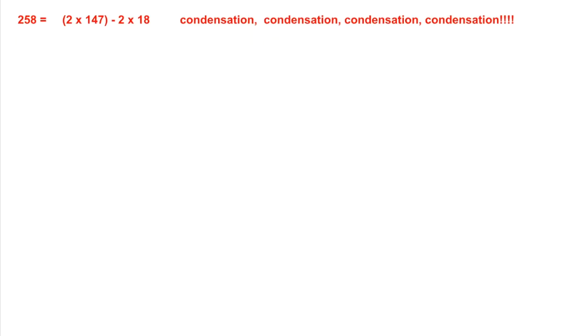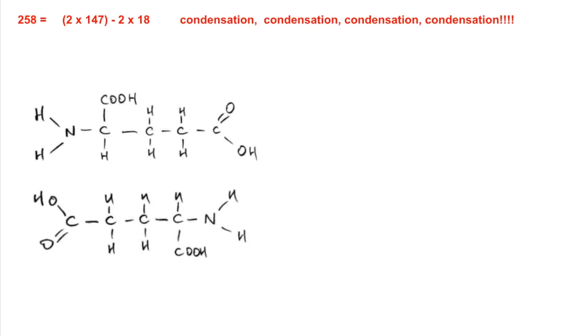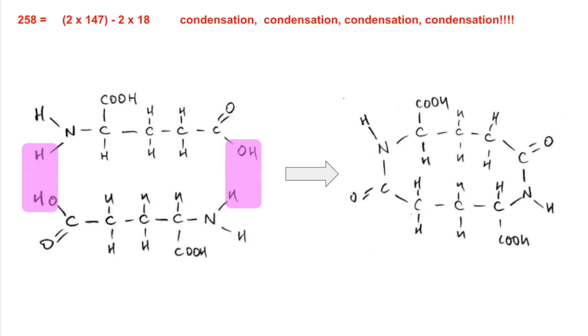So we've obviously got two glutamic acid molecules and notice how I'm drawing them. Drawing them so that I can take the water out and we're going to take water out two times now. And again we're just going to form a cyclic, this would be a cyclic diamide now.